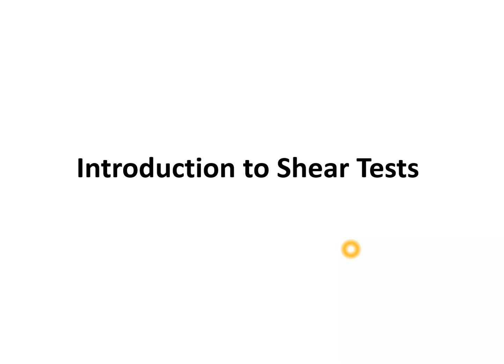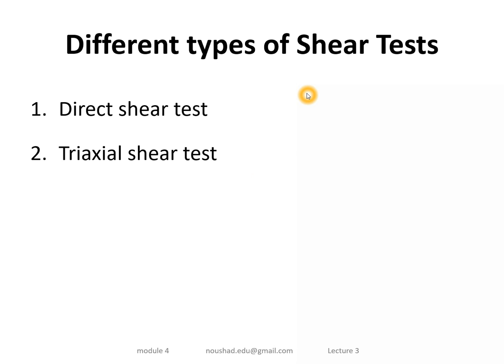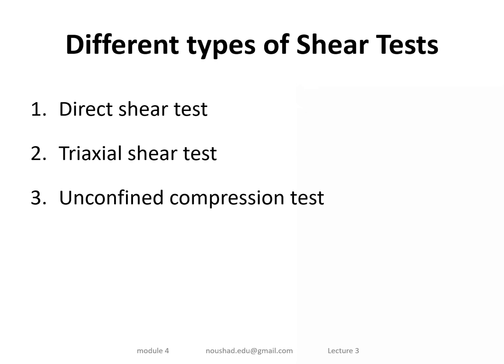There are various types of shear tests: the first one is the direct shear test, the second one is the triaxial shear test, the third one is the unconfined compression test, and the fourth one is the vane shear test.